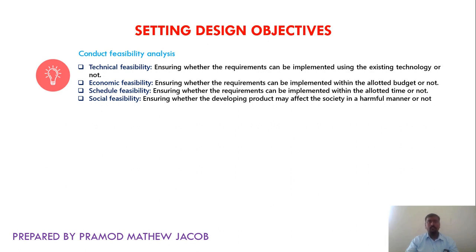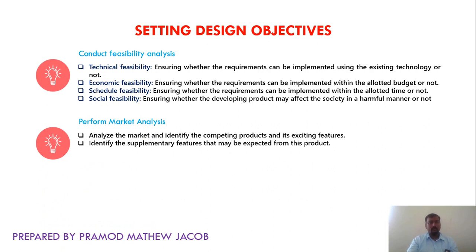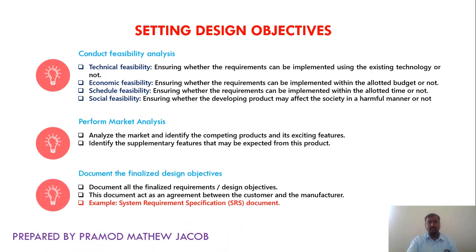Social feasibility ensures that the product may not affect society in a harmful manner. Next, we perform market analysis — analyzing the market to identify competing products and their features so that we can develop a much better product. We can circulate a questionnaire among customers to identify supplementary features expected from the product. Based on feasibility and market analysis, the designer documents all finalized design objectives. This document acts as an agreement between the customer and the manufacturer — for example, a system requirements specification document.